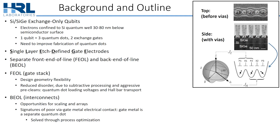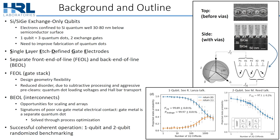We see this reduced disorder in quantum dot loading voltages and also Hall transport. I'll also show one of the possible problems: if vias are not electrically well connected to gate metal, the gate accesses its own quantum dot. But this can be solved through process optimization. And while not the focus of this talk, these SLEDGE devices do produce high-performance exchange-only qubits. My colleagues will be talking in further depth about these, including one-qubit randomized benchmarking at 99.9% fidelity and two-qubit at 97.1% fidelity.